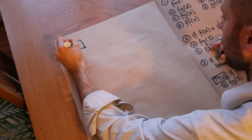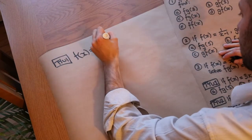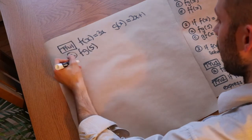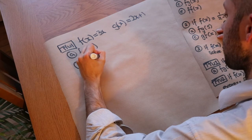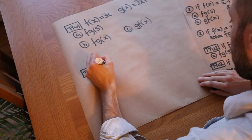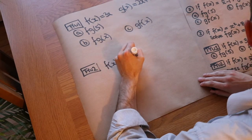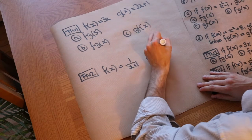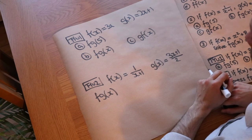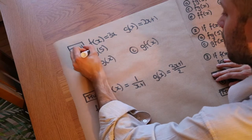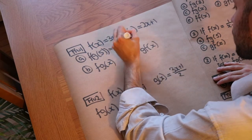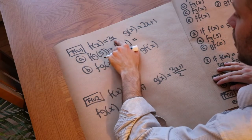Here are two test-your-understanding questions. For f(x) = 3x and g(x) = 2x + 1: find f(g(5)), f(g(x)), and g(f(x)). For f(g(5)): g(5) = 2 times 5 plus 1 = 11, then f(11) = 3 times 11 = 33.